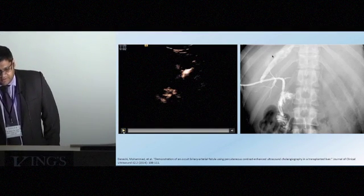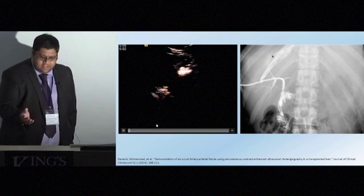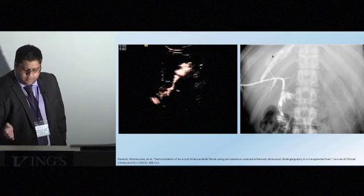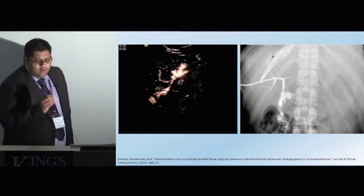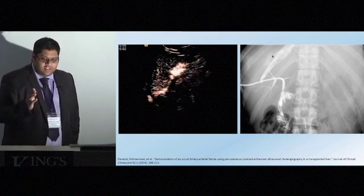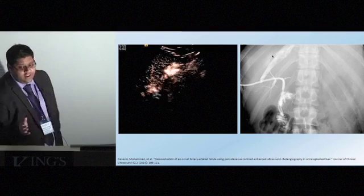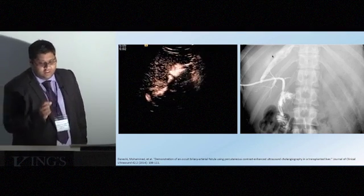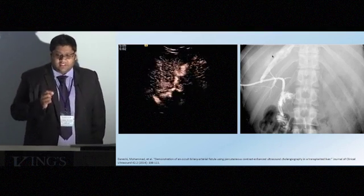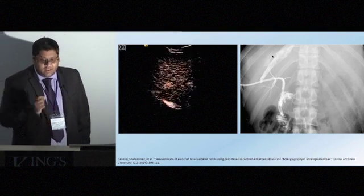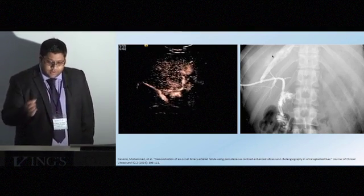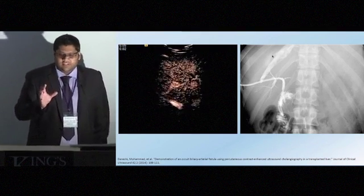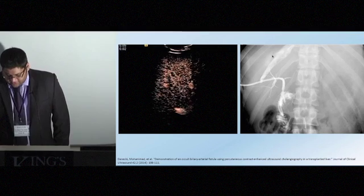One of my colleagues, Dr Dineshi, has done a study showing that with an indwelling biliary drain, although you see opacification of the biliary system, you also start to see hepatic parenchymal opacification. Going back to the idea of a truly intraluminal agent — we shouldn't get that unless there is some sort of vascular fistula. And that was in fact confirmed at angiography, demonstrating the potential to know we are in a defined space and detect unexpected extravascular extravasation.